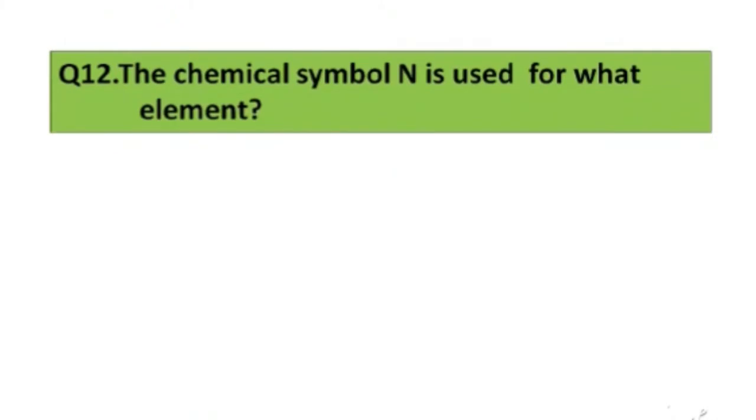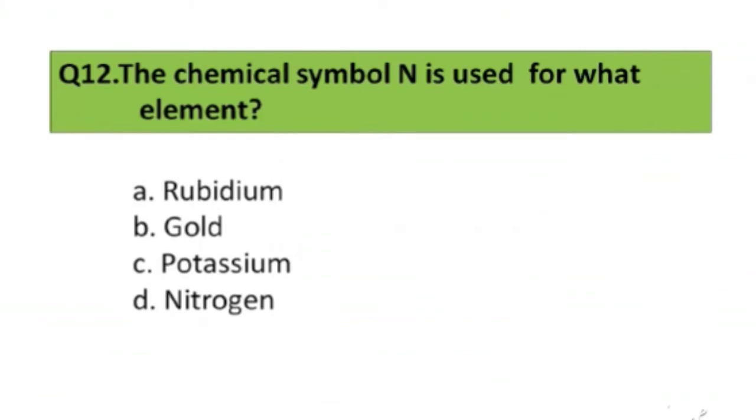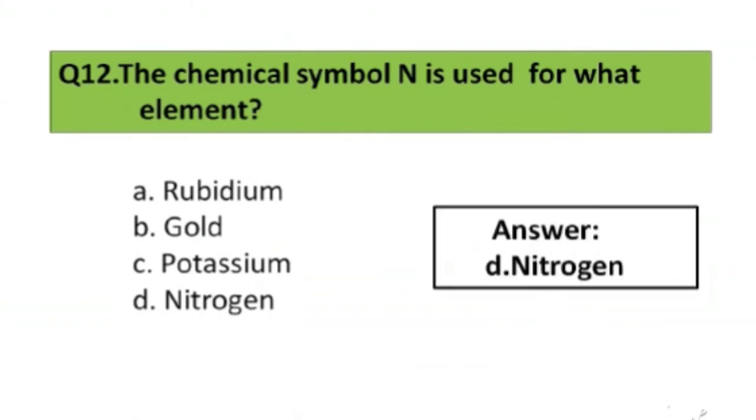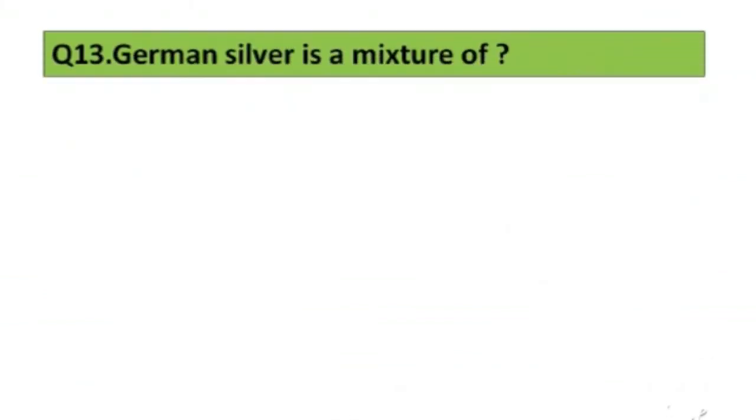Question number 12. The chemical symbol N is used for what element? A. Rubidium, B. Gold, C. Potassium, D. Nitrogen. The right answer is option D, Nitrogen.